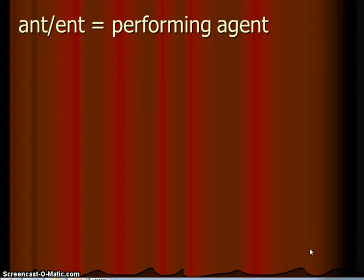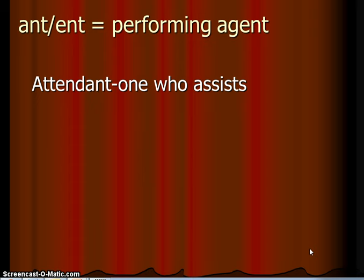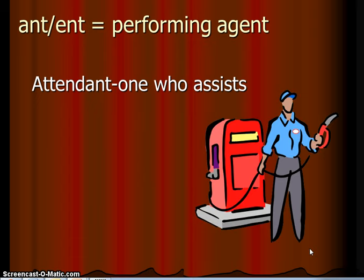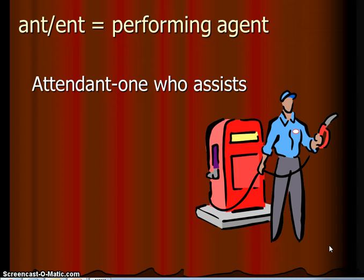The first suffix we have is '-ant' or '-int,' which means a performing agent. Here's my example: an attendant — one who assists. They're performing a job for somebody. This right here is actually a gas station attendant. They used to be around back in the 50s or 60s. If you go to small towns, you might even see someone come out and pump your gas and wipe off your windshield. But they perform a job for you — they assist you. And that's how it fits into the suffix.